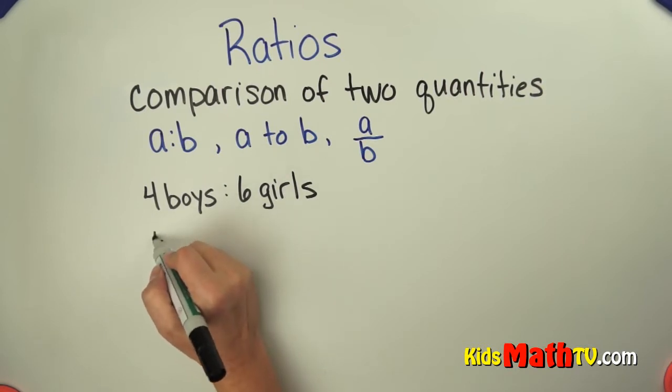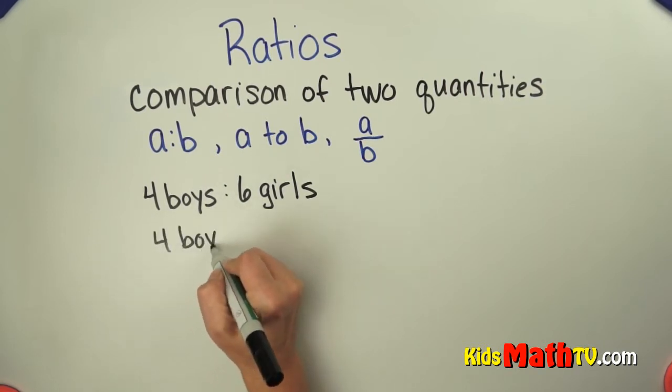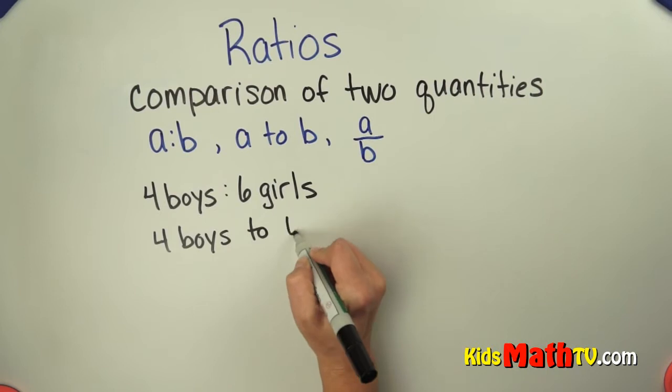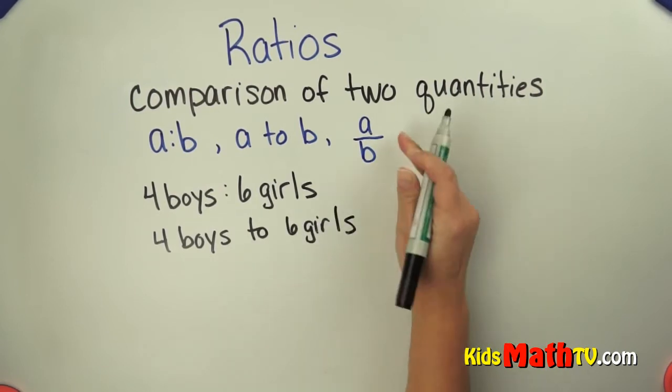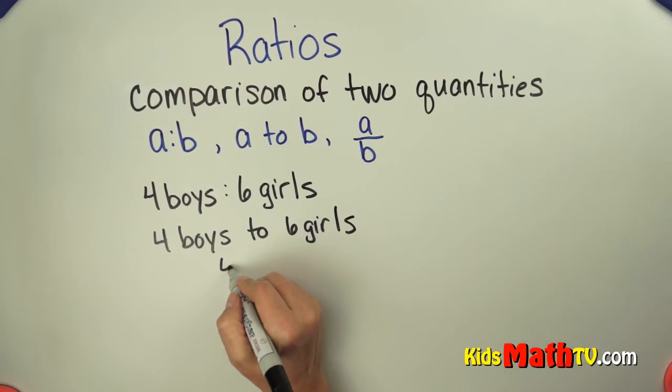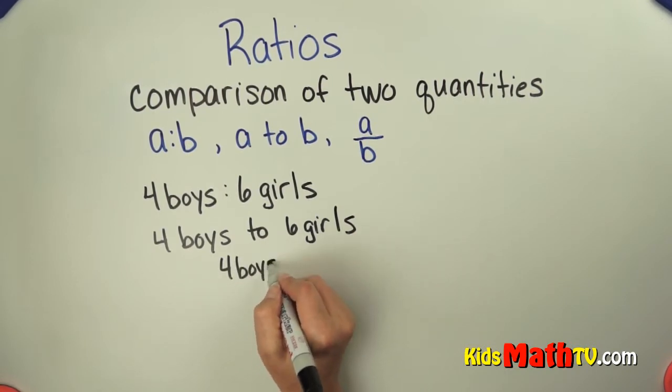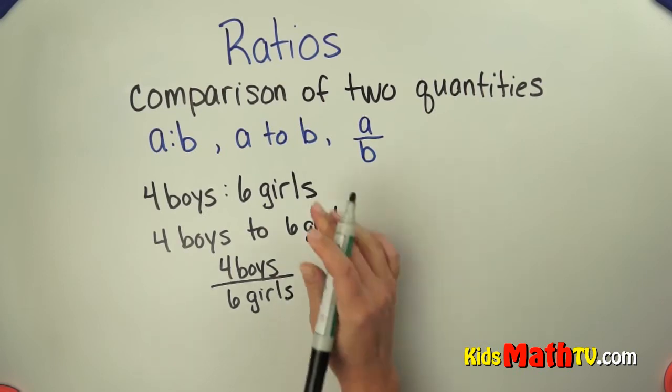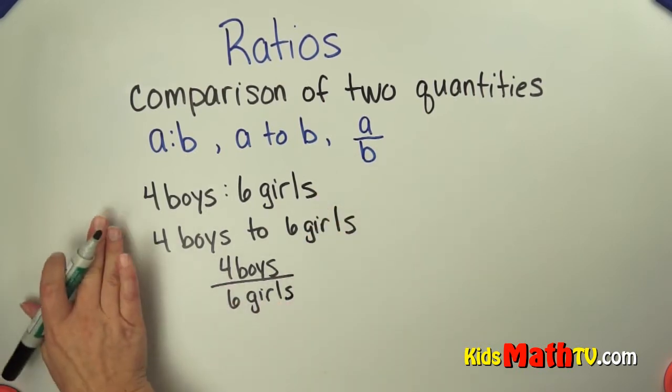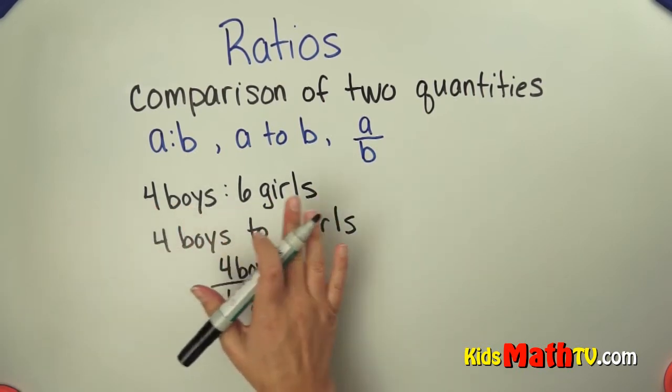We could write it four boys to six girls. Or we could write it as a fraction, four boys to six girls. It's read the same way in every single one. So it's a ratio, four boys to six girls.